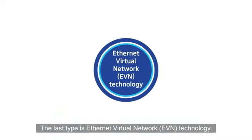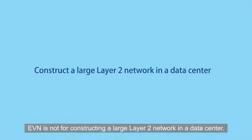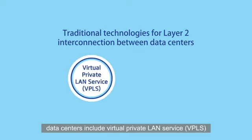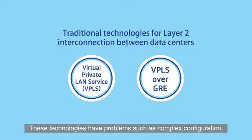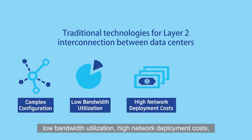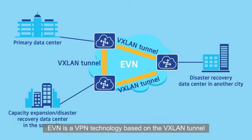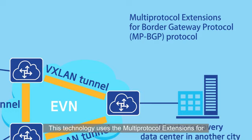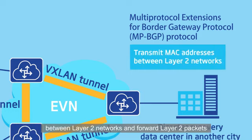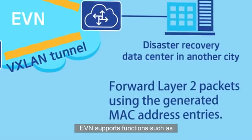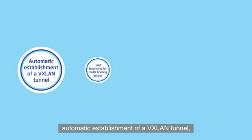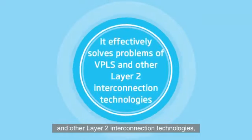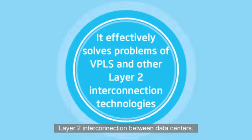The last type is Ethernet virtual network (EVN) technology. EVN is not for constructing a large layer 2 network within a data centre, but for implementing cross-data-centre layer 2 interconnection. Traditional technologies for layer 2 interconnection between data centres include virtual private LAN services (VPLS) and enhanced VPLS over GRE. These have problems such as complex configuration, low bandwidth utilisation, high deployment costs and high network resource consumption. EVN is a VPN technology based on the VXLAN tunnel for layer 2 interconnection and can be considered an extension of VXLAN. It uses multi-protocol extensions for BGP to transmit MAC addresses between layer 2 networks and forward layer 2 packets using generated MAC address entries. EVN supports automatic establishment of VXLAN tunnels, load balancing for multi-homing access, BGP route reflection and ARP cache proxy. It effectively solves problems of VPLS and is one of the ideal solutions for layer 2 interconnection between data centres.